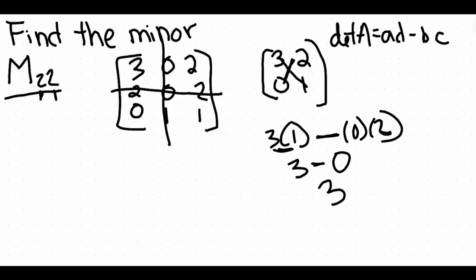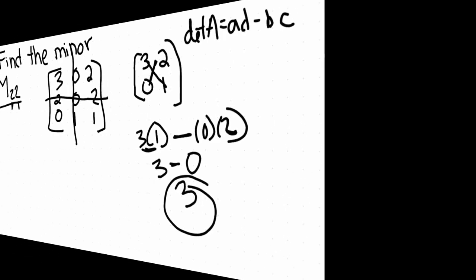They could go then and ask you to maybe delete a different row and column and that kind of thing. This one specifically said two, two. So again, just delete the designated row and column that they asked and then find the determinant of that resulting matrix. So for ours, that was a three. That is it for this video.